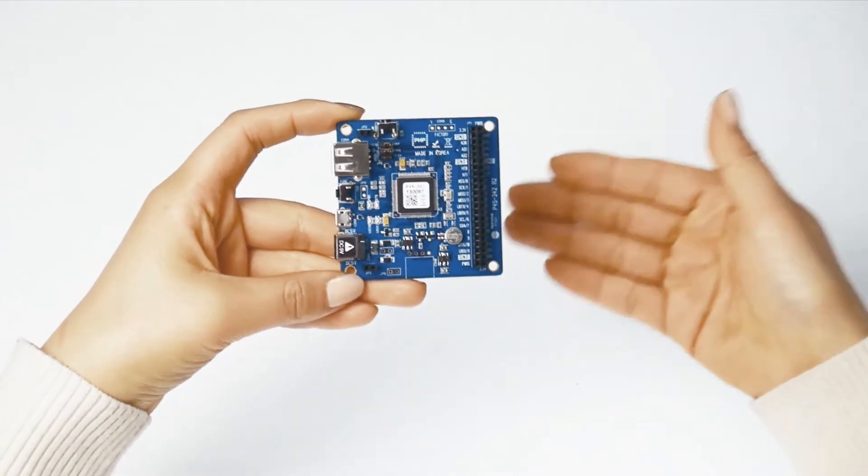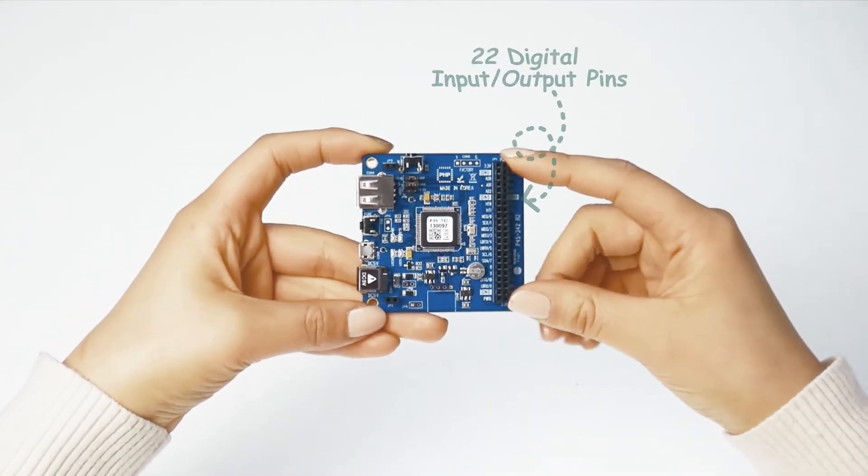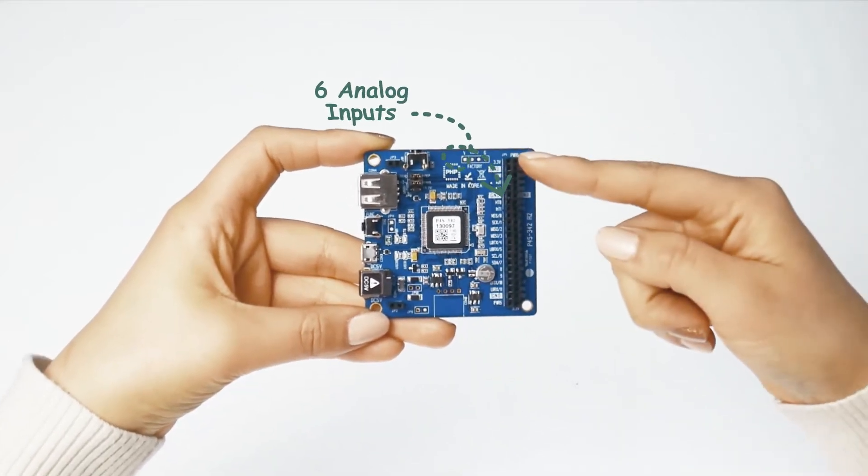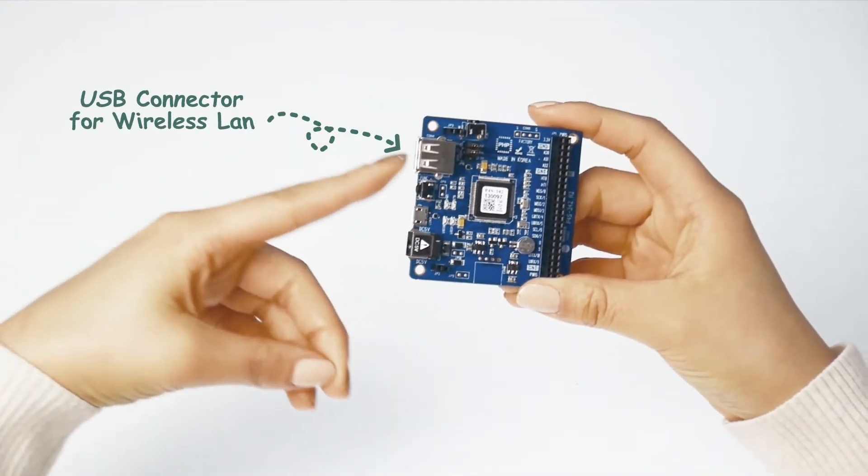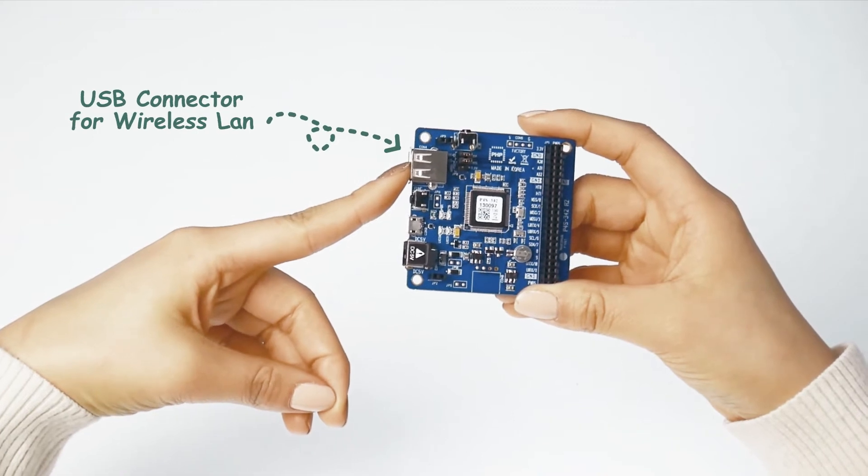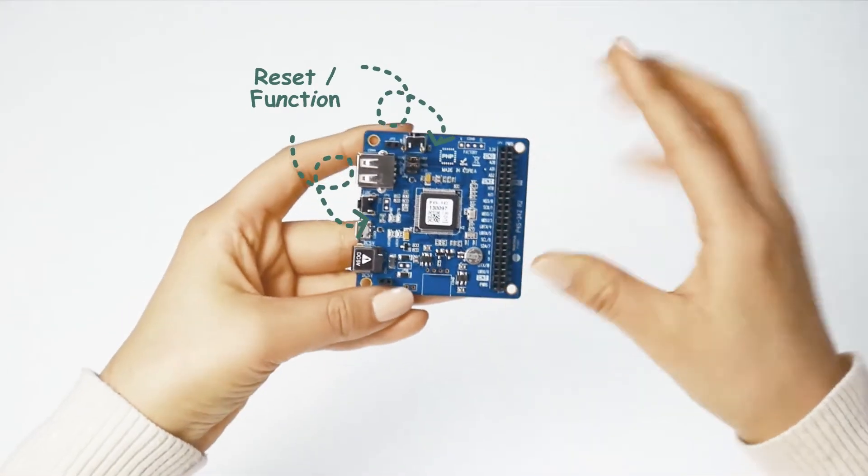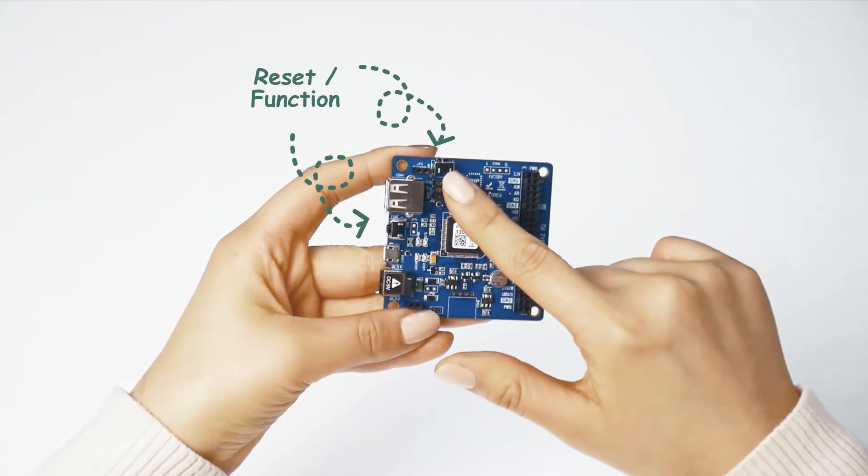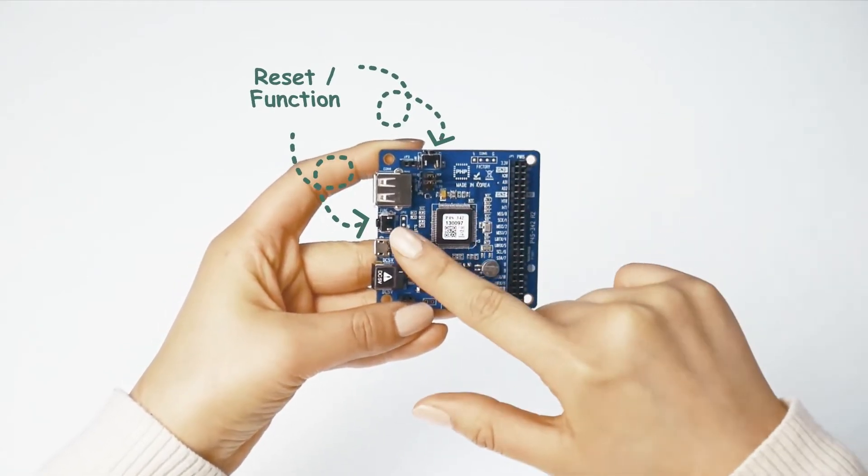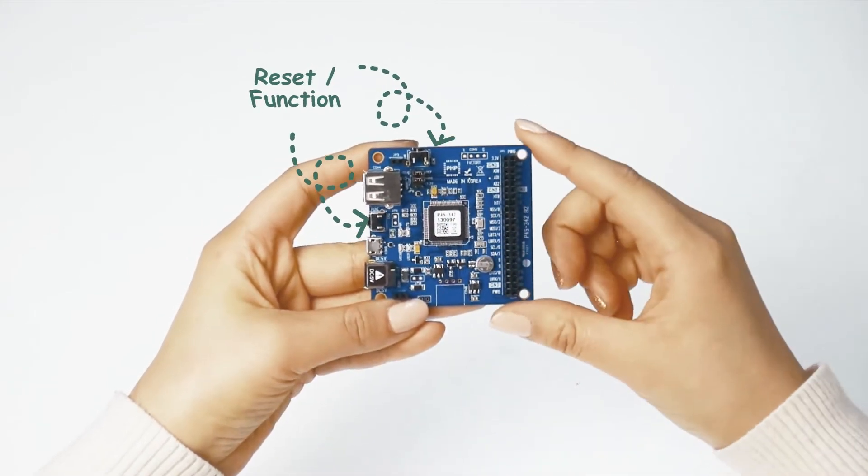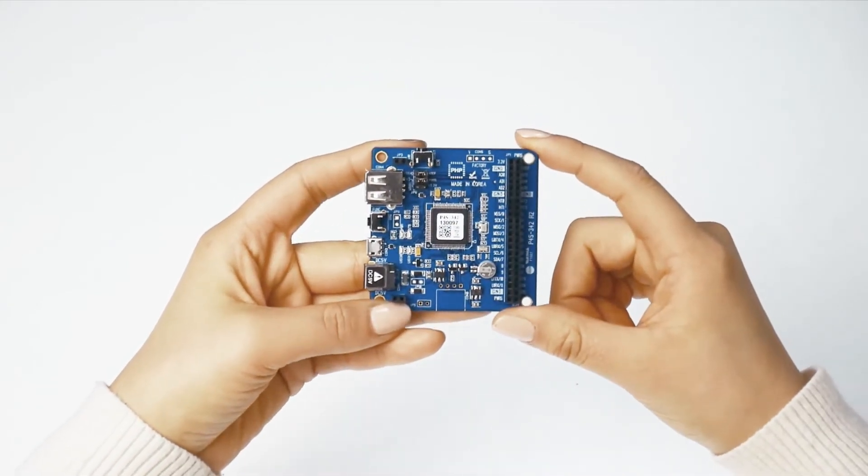All right, so it's a programmable board and has 22 digital input and output pins and six analog inputs here, and a USB connector for wireless LAN connectivity and a power jack. All right, so there are two buttons, one for reset and the other is for function. This function button is used for changing mode to button setup mode.